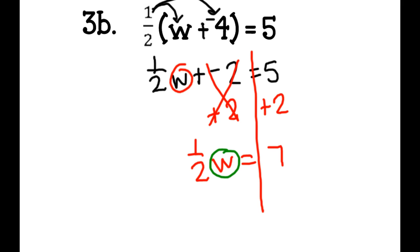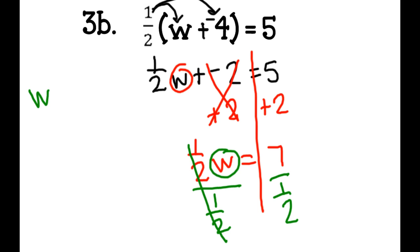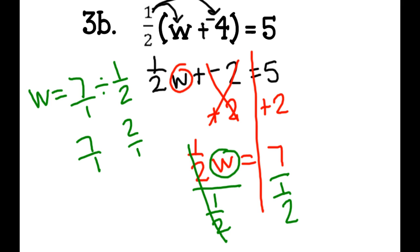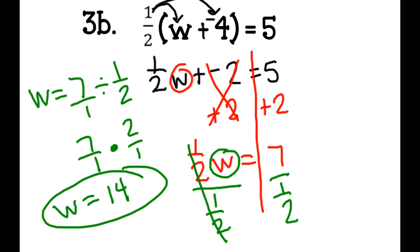I'm trying to get variable w by itself. To undo the multiplication of 1 half times w, I divide both sides by 1 half — what you do to one side, you must do to the other. w equals 7 divided by 1 half. Keep, flip, change: 7 times 2 is 14. So w equals 14. Circle it, and that's my answer.